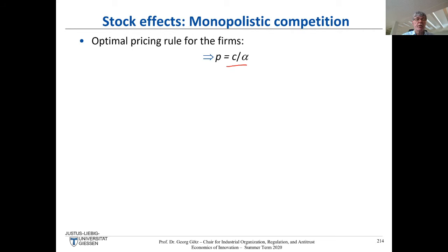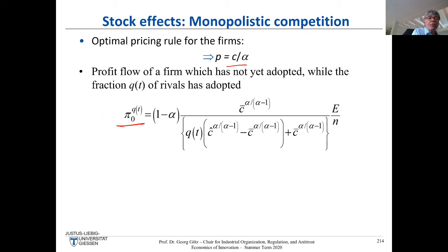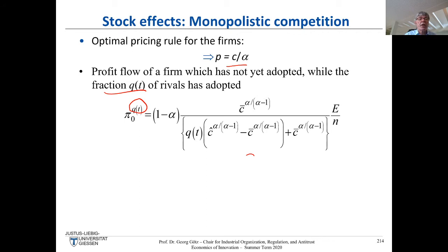This gives a very nice result because you can write up the profit function directly. π₀ denotes profit using the old technology (marginal cost C-bar), and the superscript q(t) is the share — the fraction of rivals — that has adopted. As more rivals adopt the new lower-cost technology, the denominator increases (rival prices fall), and your profit goes down.